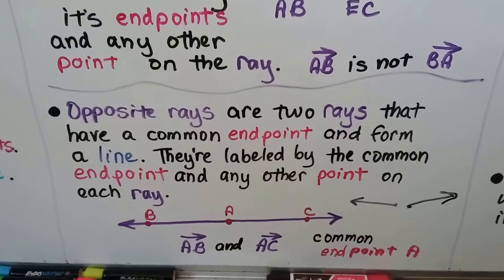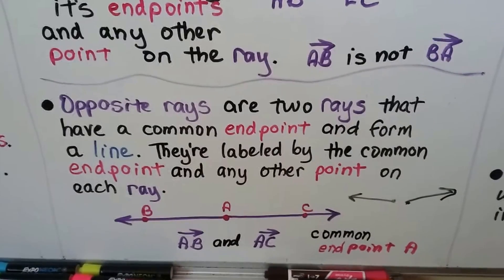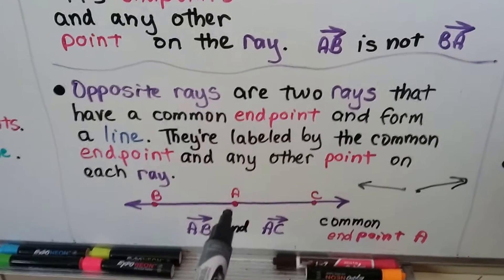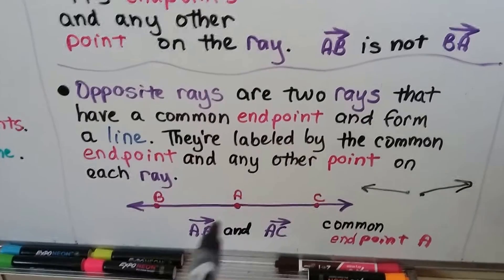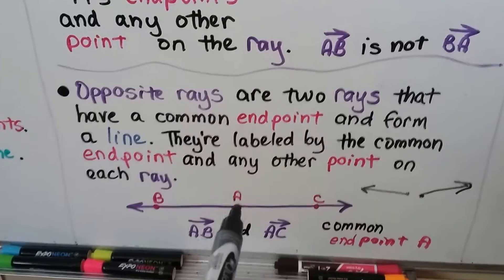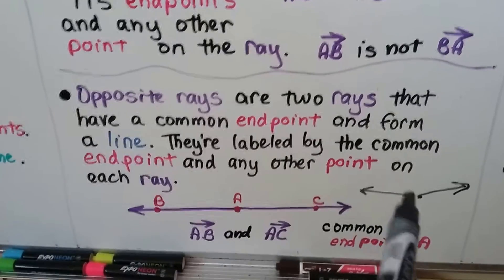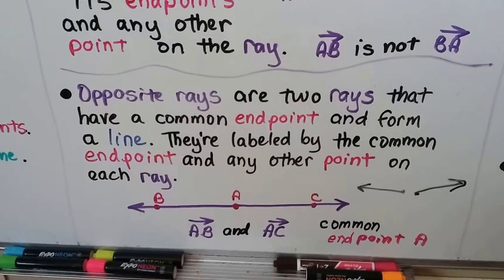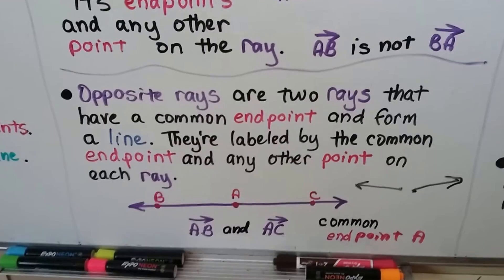Opposite rays are two rays that have a common endpoint and form a line. And they're labeled by the common endpoint and any other point on each ray. So here we have a ray AB. Here's the endpoint and it's going this way. And it's connected to this endpoint A and C going in that direction. So it's almost like we have two separate rays, but they're connected at A in the middle. So we have ray AB and ray AC. They have A as a common endpoint.